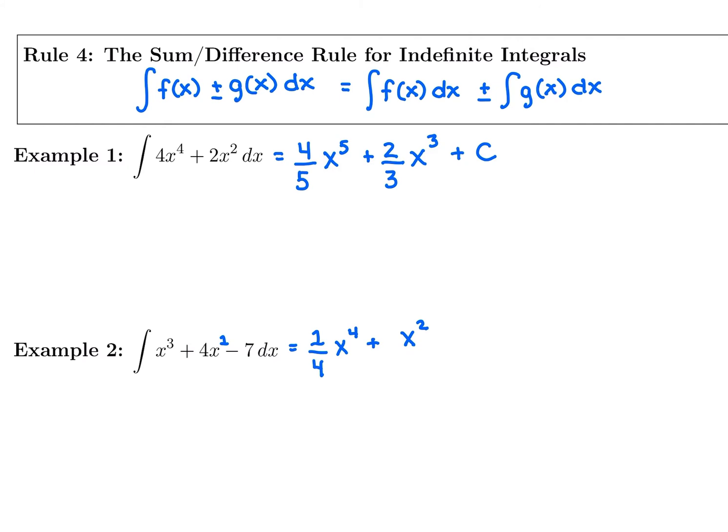So we'd have 1 plus 1 is 2. That would give us 4 over 2, x to the 2. This is a case where I would simplify it. Because 4 divided by 2 is the same thing as just 2. So 4 over 2, x to the 2 just ends up being 2x squared. And then we have the antiderivative of a constant. The antiderivative of negative 7 is going to be negative 7x plus c. It's that constant times x plus c.